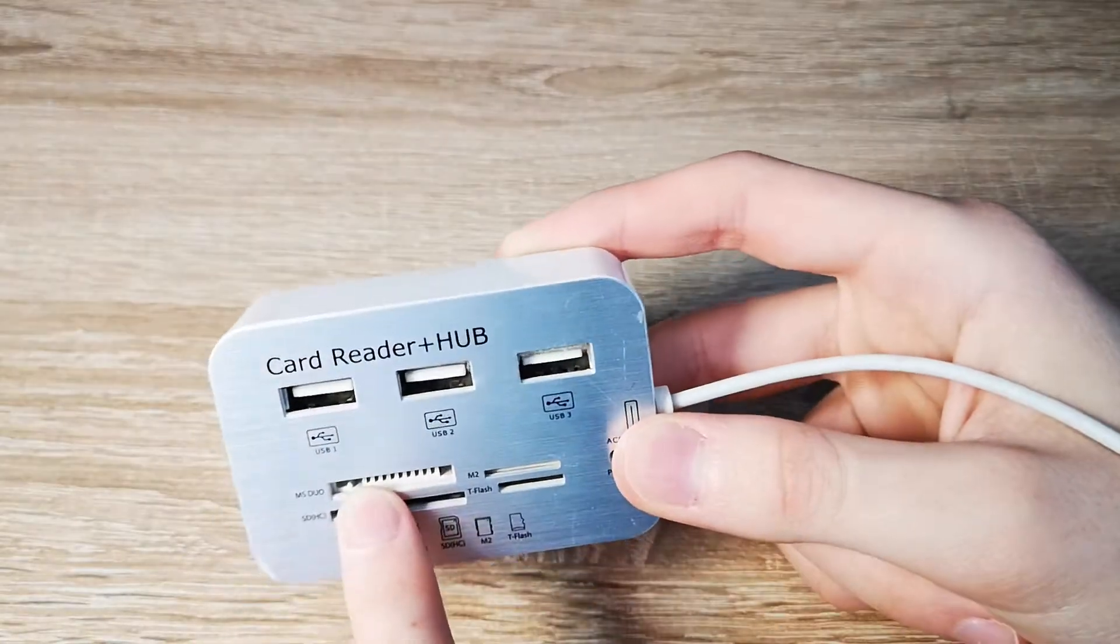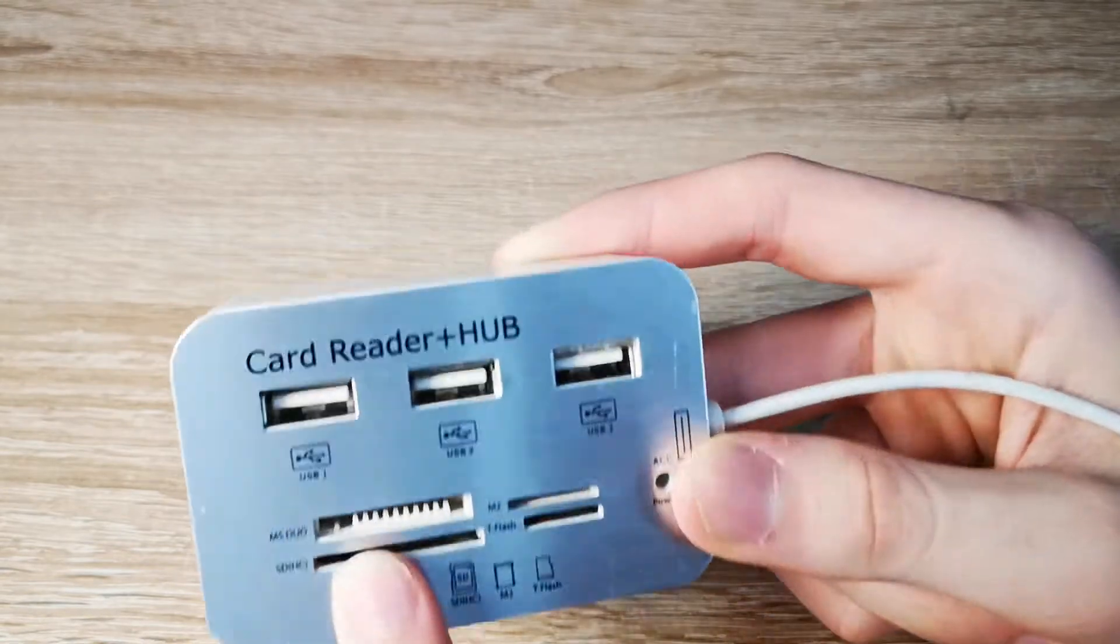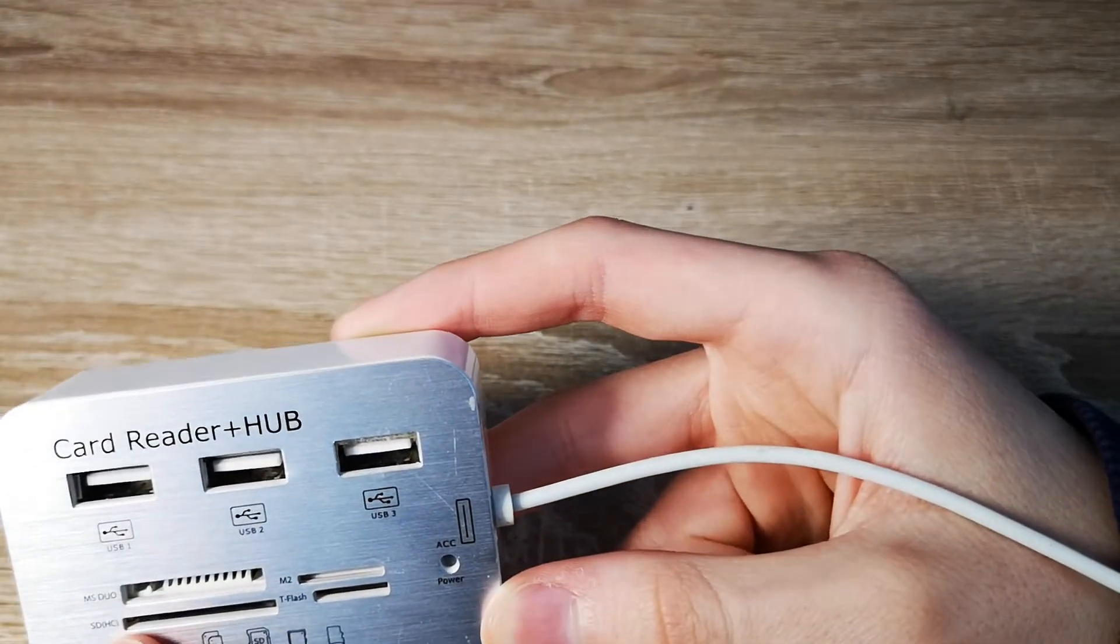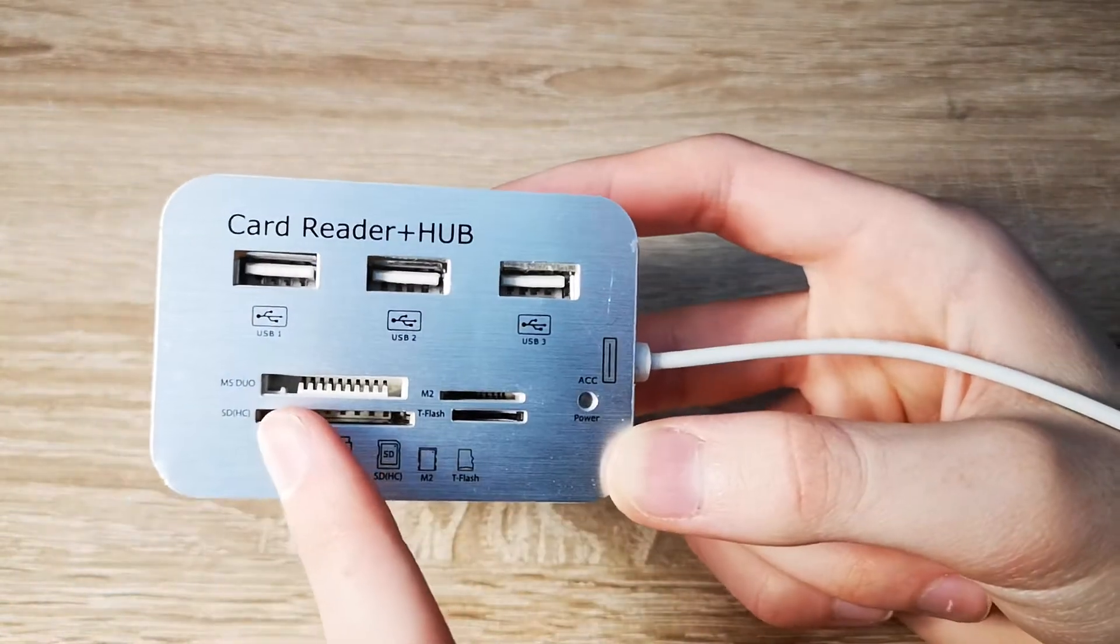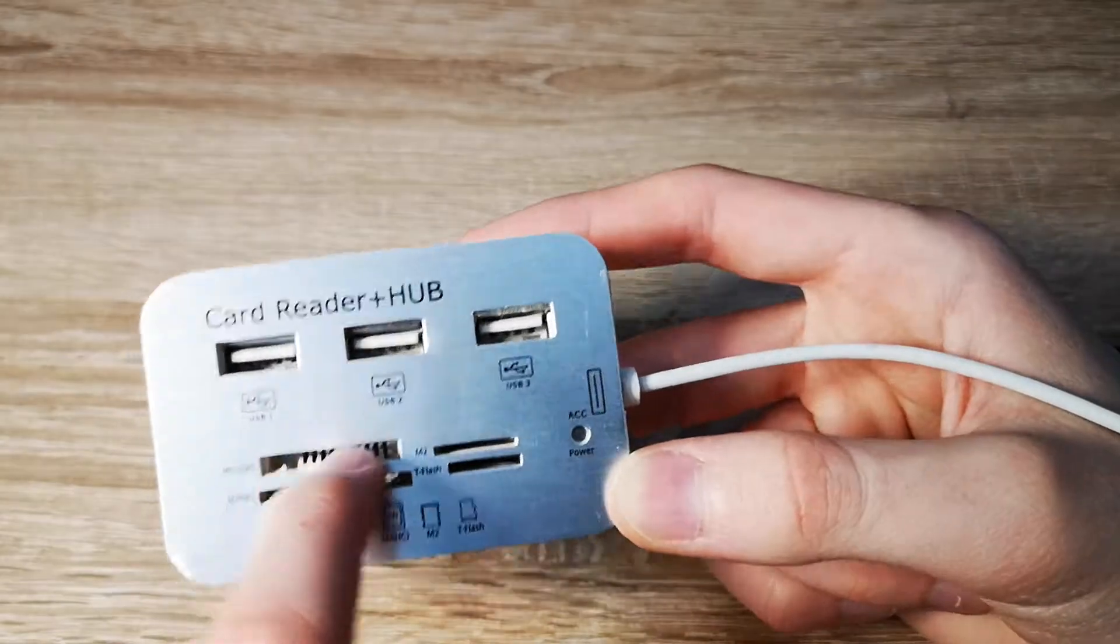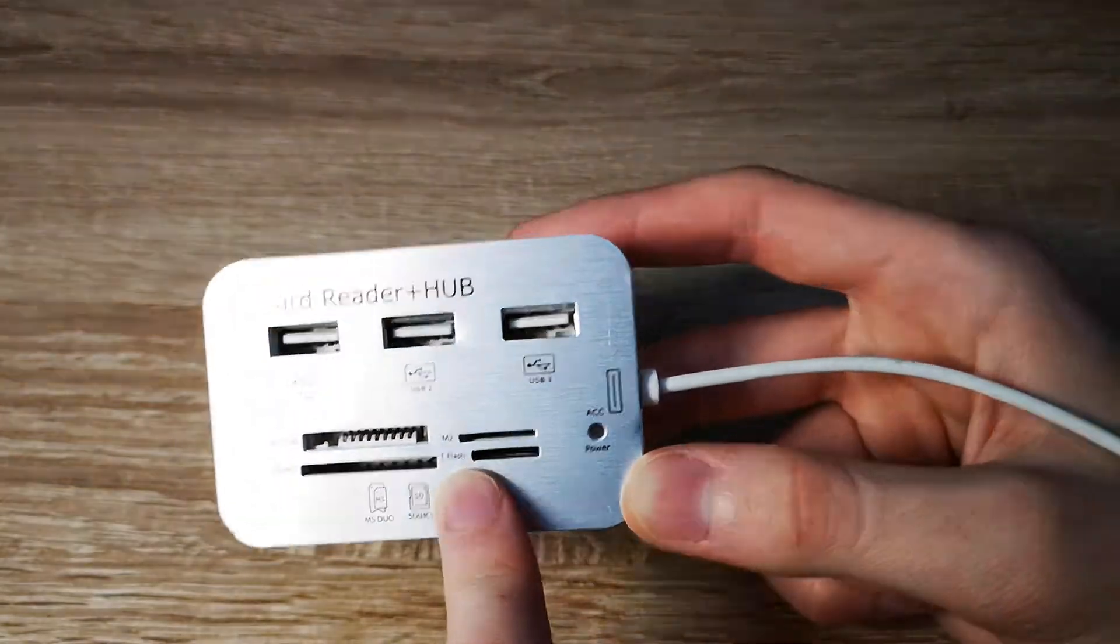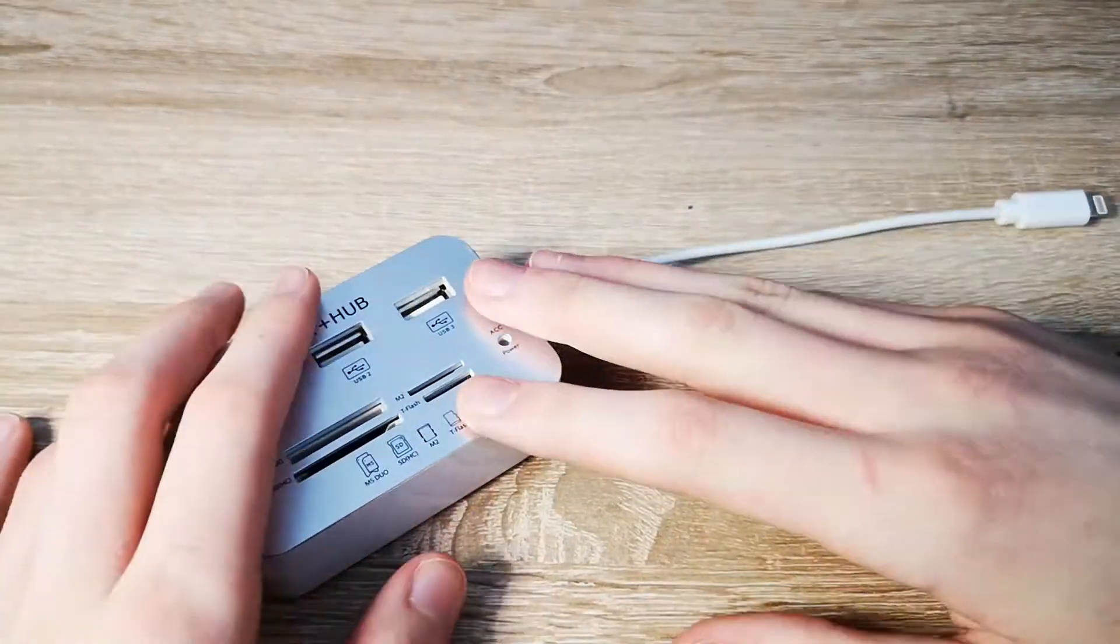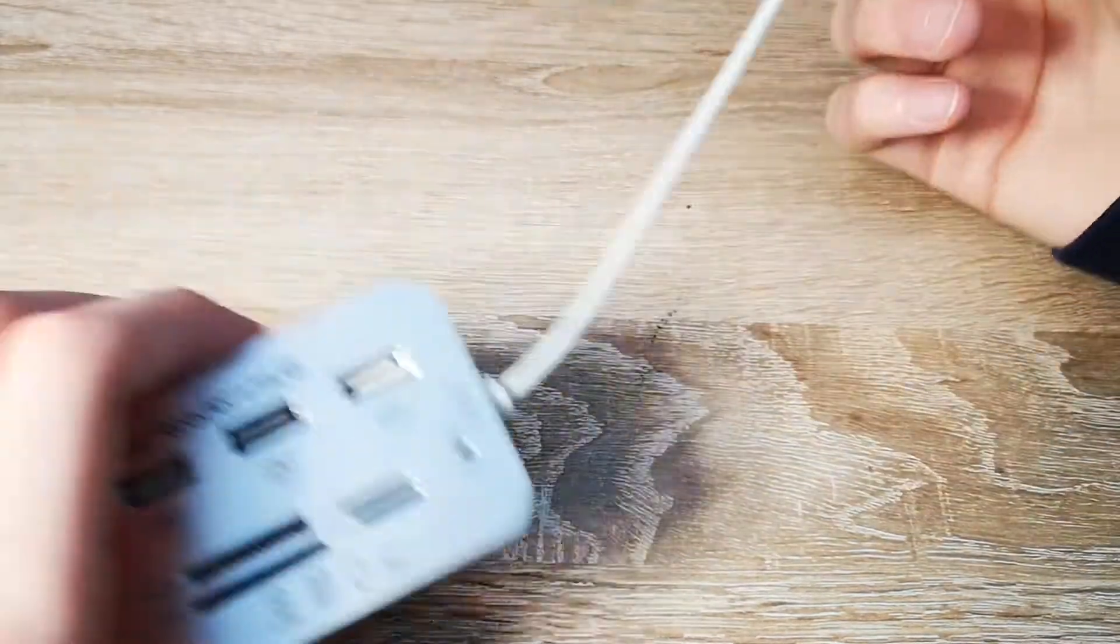One MS, I actually don't know what that is. MS Duo. You get SD... you get, actually, so be careful with that. M2, you get T-flash. And this thing is sixteen dollars. Sixteen.